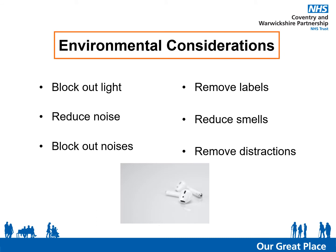Autistic people can have sensory processing difficulties which make it harder to relax, go to sleep, and stay asleep, and their environment can also play a role. It may help to block out light using dark curtains or blackout blinds, reduce noise using thick carpet or by shutting doors, turn off appliances, and move the child's bed away from a wall with activity on the other side. Other strategies include earplugs or music through headphones, removing labels from bedding and nightclothes, reducing smells by closing the door or using relaxing scented oils, removing distractions like toys and pictures, and considering a neutral colour on the walls.